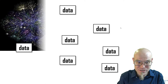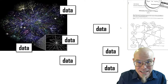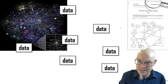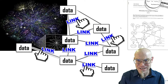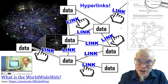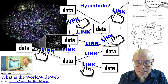We have all these different data points on the internet, and then somebody called Tim Berners-Lee in 1989 came up with the idea: why don't we connect these data points with links? We call them hyperlinks, and that gives rise to a bunch of interesting phenomena and innovations that have happened in the more than three decades since then. I invite you to check out the video about Tim Berners-Lee and his genius idea of creating the world wide web on top of the internet.